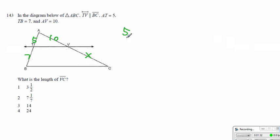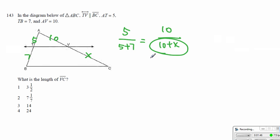We're looking at 5 to 5 plus 7, which is equal to 10 to 10 plus x. Then we get to realize, since it doubles, this one also has to double — which means this one is also equal to 12. Double of 12 is 24. So therefore, 10 plus x must be equal to 24, and x must be equal to 14.